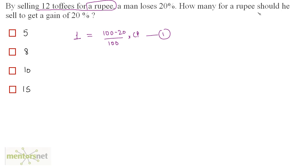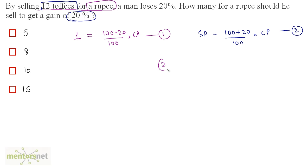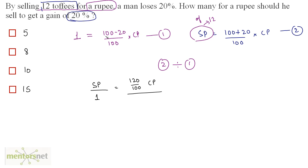Now let's find the selling price of 12 toffees when there is a gain of 20%. The new selling price equals (100 + 20)% of cost price, so 120/100 times the cost price. This is equation 2. Dividing equation 2 by equation 1: SP divided by 1 equals (120/100 × CP) divided by (80/100 × CP).